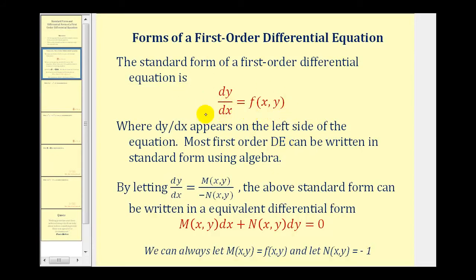Once we have an equation in standard form, if we let dy/dx equal M of x comma y divided by negative N of x comma y, the above standard form can be written in an equivalent differential form: M of x comma y dx plus N of x comma y dy equals zero. When writing a DE in differential form, the differential form is not unique. However, if we ever get stuck, we can always let M of x comma y equal f of x comma y, and then let N of x comma y equal negative one.